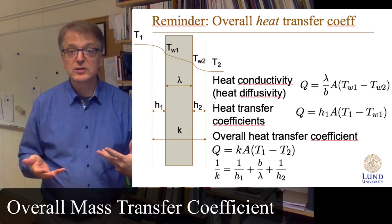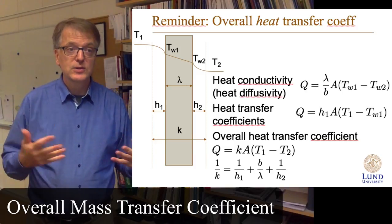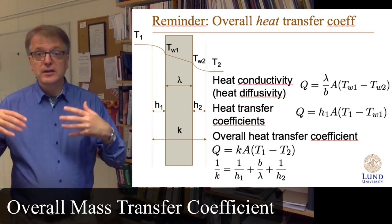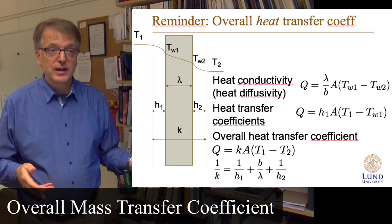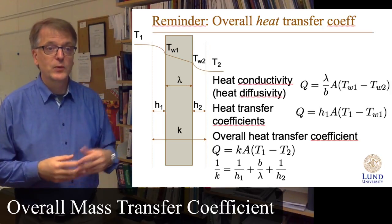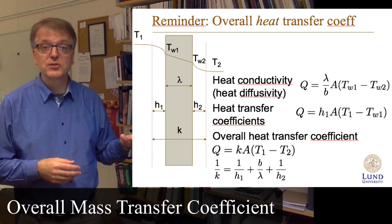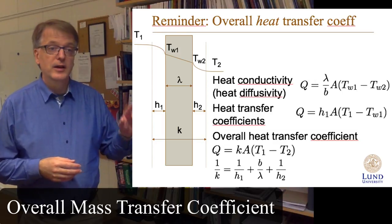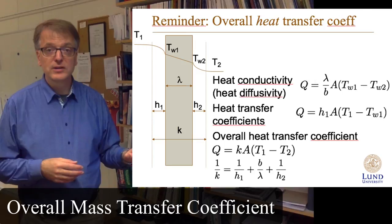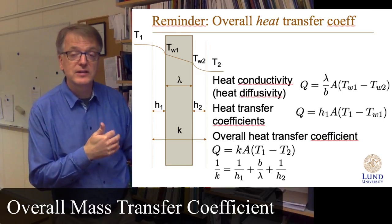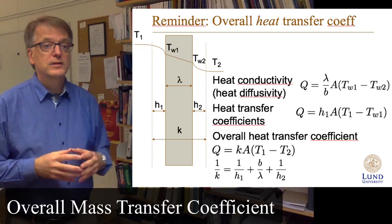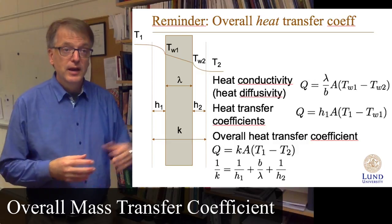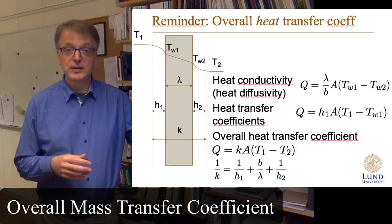We can define an overall heat transfer coefficient as Q equals K times the area times the temperature difference. We can rearrange things and derive that one divided by the overall heat transfer coefficient equals one divided by the first heat transfer coefficient plus the thickness divided by the conductivity. If you have several different materials, you take the sum of the thickness divided by the respective conductivity, and then one divided by the other heat transfer coefficient.